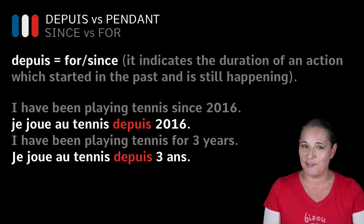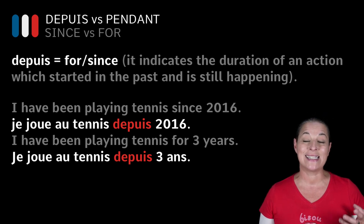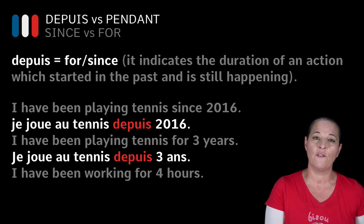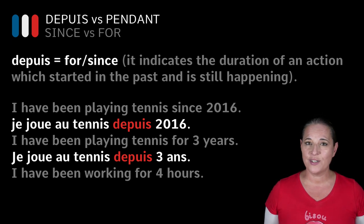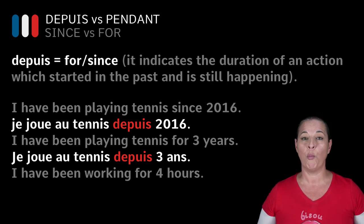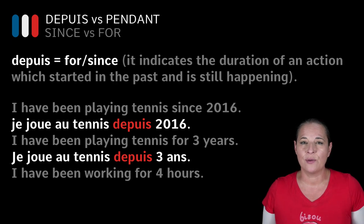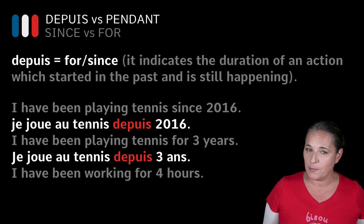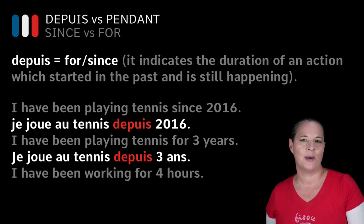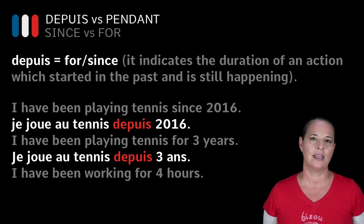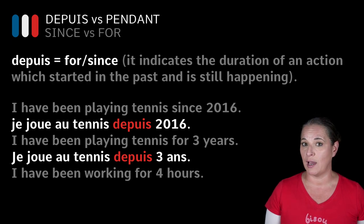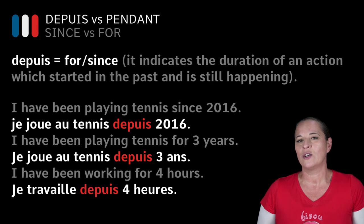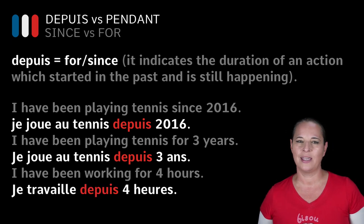To recap: 'depuis' means both 'since' and 'for.' If you wanted to say 'I have been working for four hours,' you use 'depuis' because it's an action happening from the past and still carrying on — it's been happening for the last four hours. The translation for this sentence will be 'je travaille depuis quatre heures.'